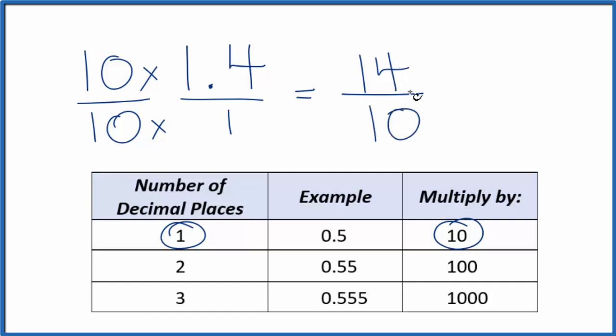And here's our fraction, 14 tenths. We could write it as a mixed fraction. 10 goes into 14 one time with 4 left over, so we get 1 and 4 tenths.